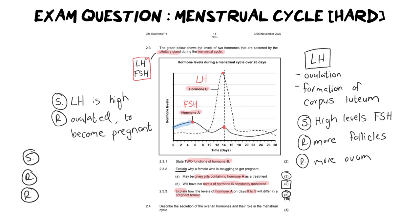Explain how the levels of hormone A on days 0 to 5 will differ. So, our opening statement for that is going to be the FSH levels are going to be low. So, we've made a statement. We've said they're low. But now let's give some reasons for this. Why are the levels low? They are low because if you are pregnant, you are producing progesterone. And progesterone levels are high while you are pregnant. And if progesterone levels are high, they inhibit FSH. Therefore, no new follicles.